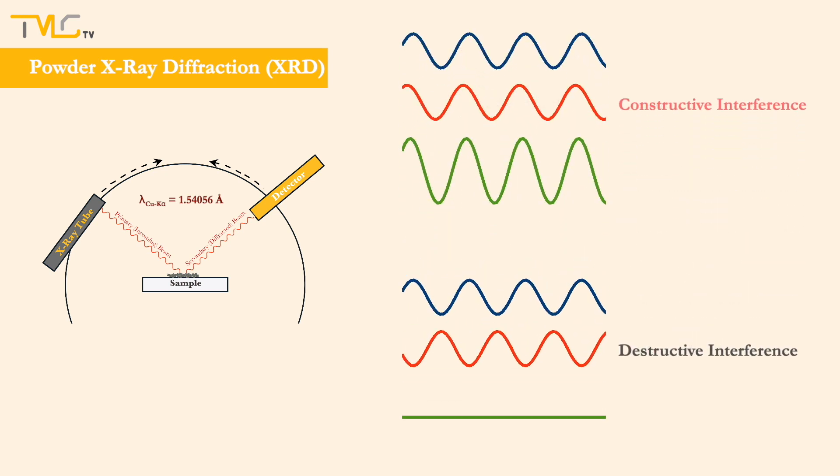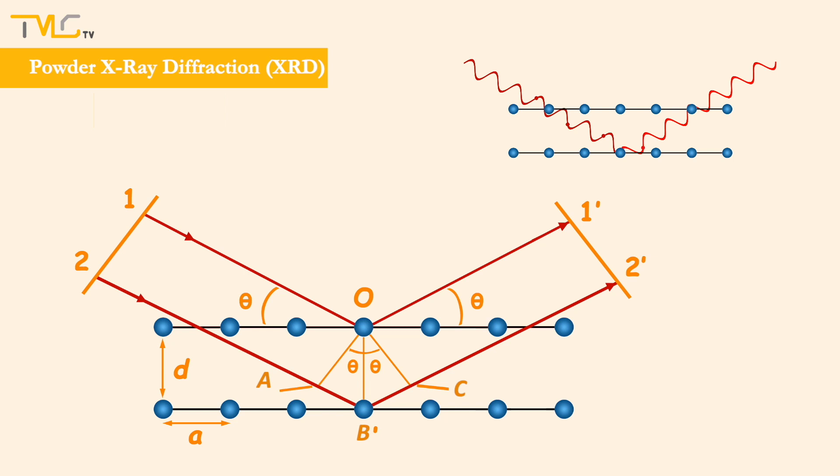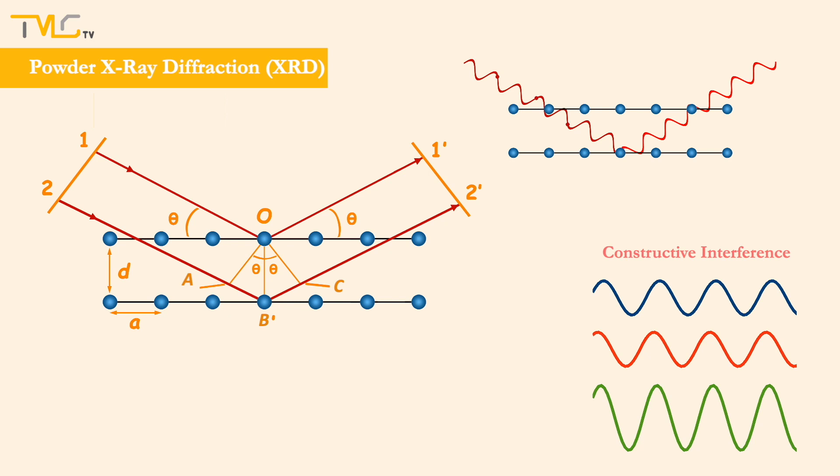When a monochromatic X-ray beam is sent to the sample, the path difference between atomic layer 1 and 2 will be AB plus BC. For an arbitrary phase shift, some of the waves under these layers will destroy each other. The only condition satisfying complete constructive interference between diffracted beams is the case where the phase shift is an integer multiple of the wavelength, meaning that AB plus BC is equal to 2d sin θ.